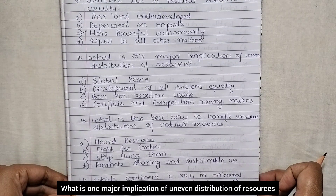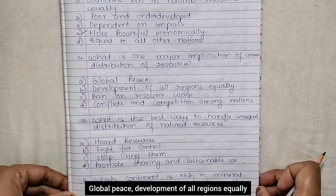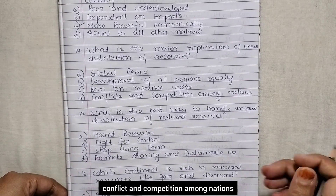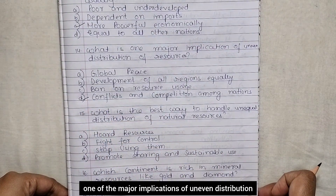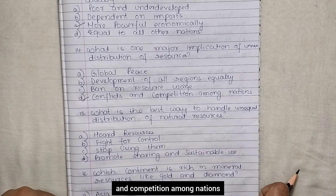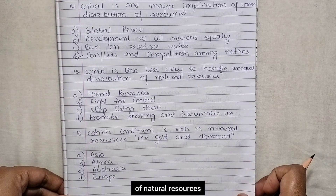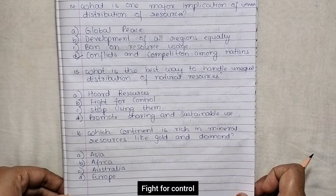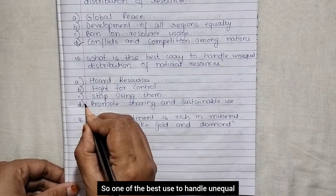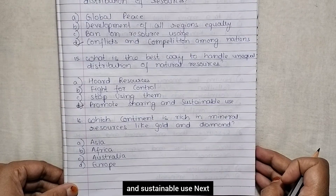What is one major implication of uneven distribution of resources? Options are global peace, development of all regions equally, ban on resource usage, conflict and competition among nations. One major implication is conflict and competition among nations. What is the best way to handle unequal distribution of natural resources? Options are hoard resources, fight for control, stop using them, promote sharing and sustainable use. The best way is to promote sharing and sustainable use.